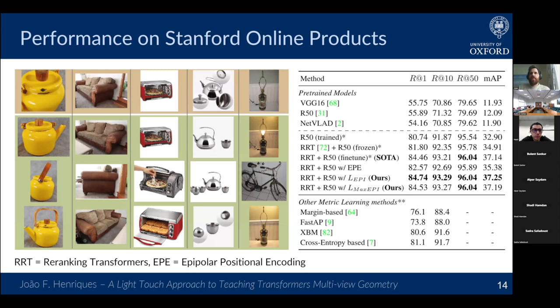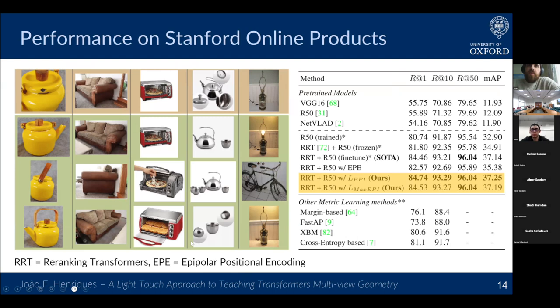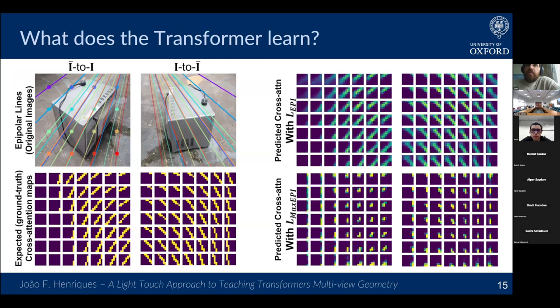We also tested on the Stanford Online Products dataset, retrieved from Amazon-type listings of objects for sale and stock photos. It shows good performance, extending the results to other datasets. Some photos are really tricky — for example, a kettle with or without cups, or an oven example where it's clearly a different oven. So it's definitely much more challenging than CO3D.